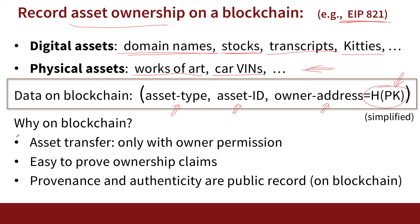So that's basically how this would work. You always have to ask: why do we want to put assets on the blockchain? Essentially, asset transfers can only happen with owner permission — the secret key is needed for every single asset transfer. It's easy to prove ownership and authenticity claims: you simply prove that you know the secret key corresponding to the current public key recorded on the blockchain. Provenance and authenticity are all recorded on the blockchain, making it easier to tell you're not looking at a forgery. This might equally be applicable to pharmaceuticals and other domains as well.